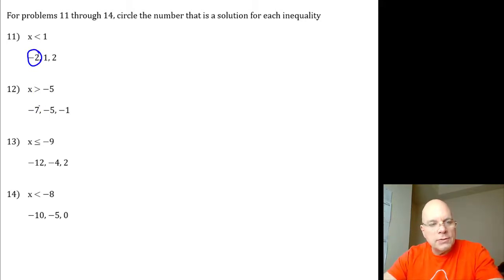Which of these values is greater than negative 5? Well, negative 7 is less than negative 5. Negative 5 is negative 5. Negative 1 is greater than negative 5 because it's closer to the 0. It's further to the right on a number line.